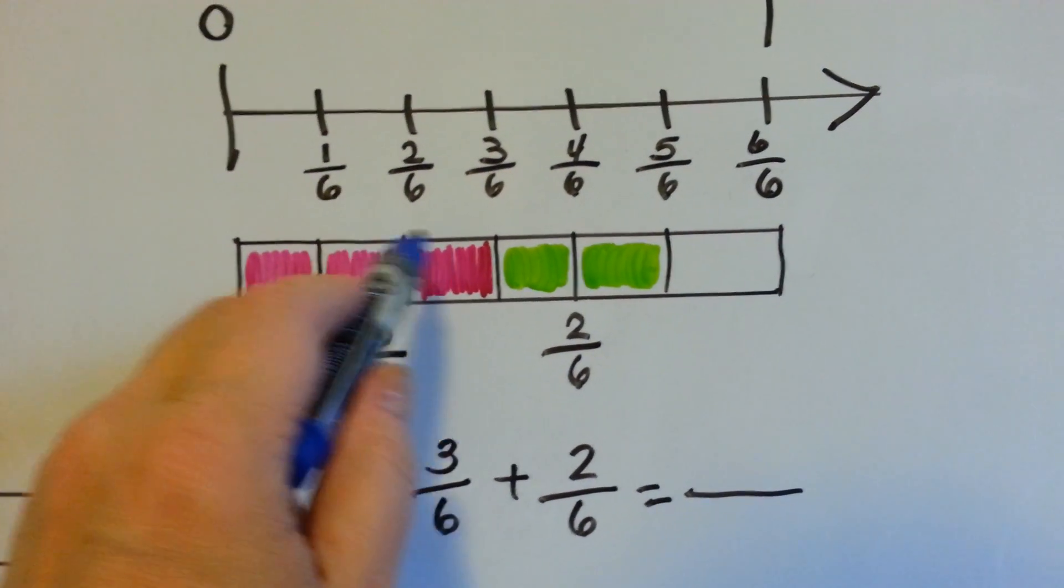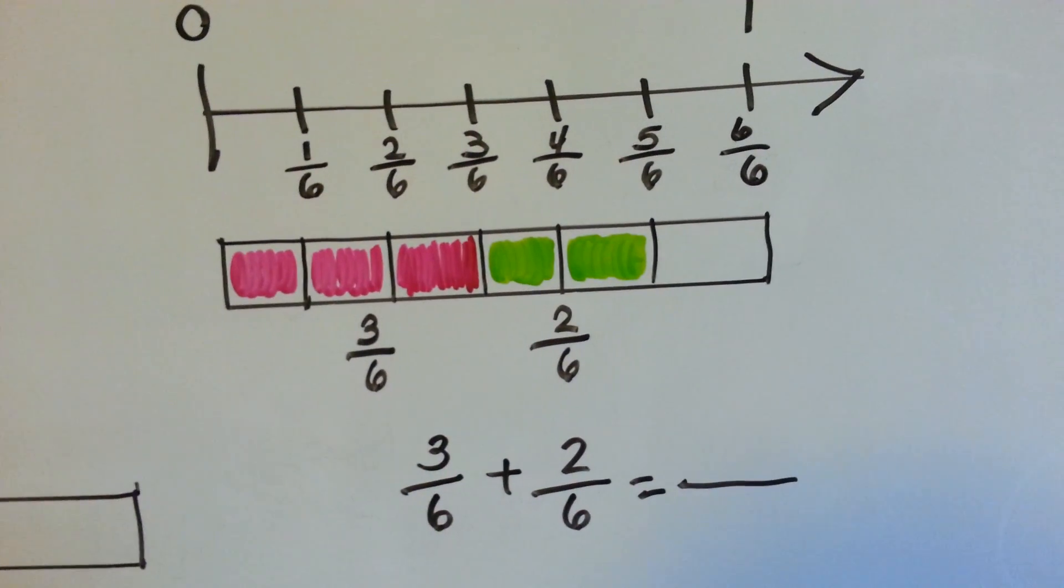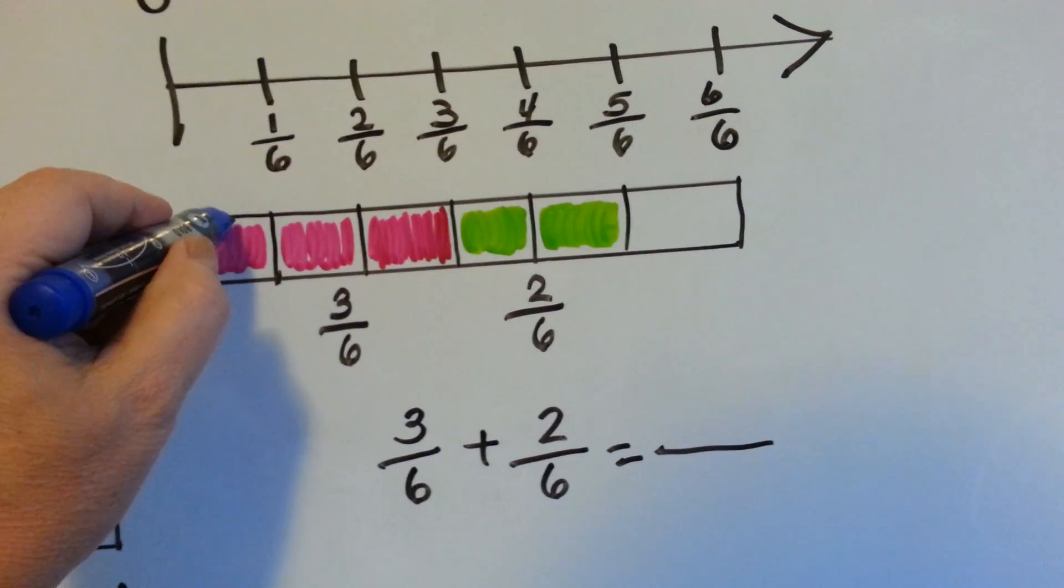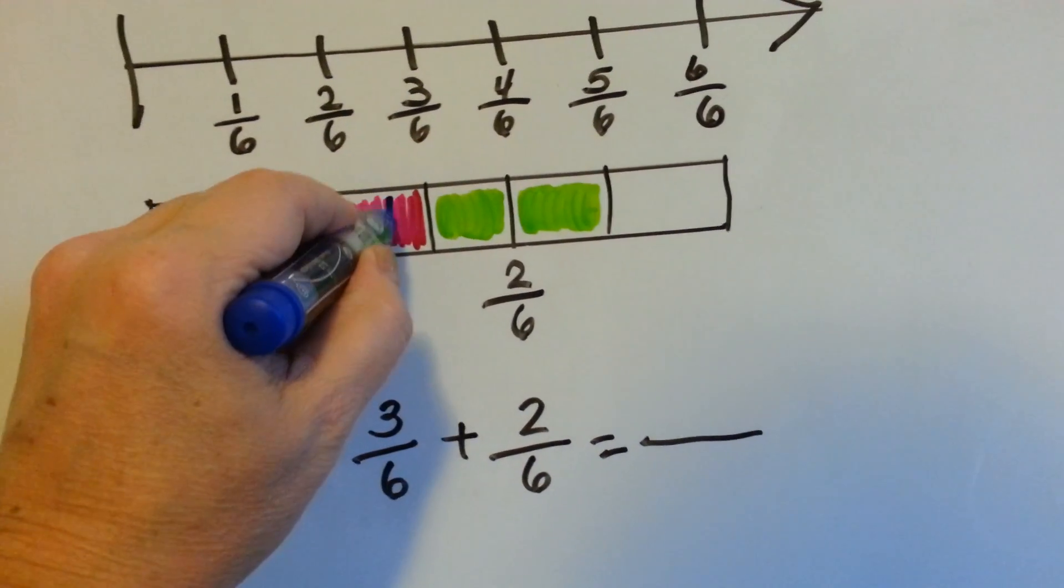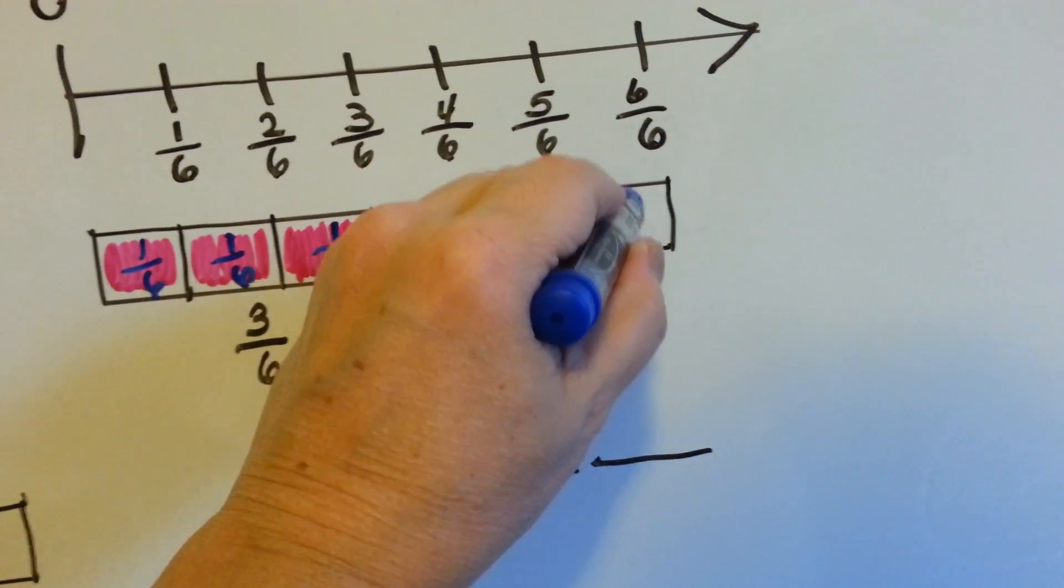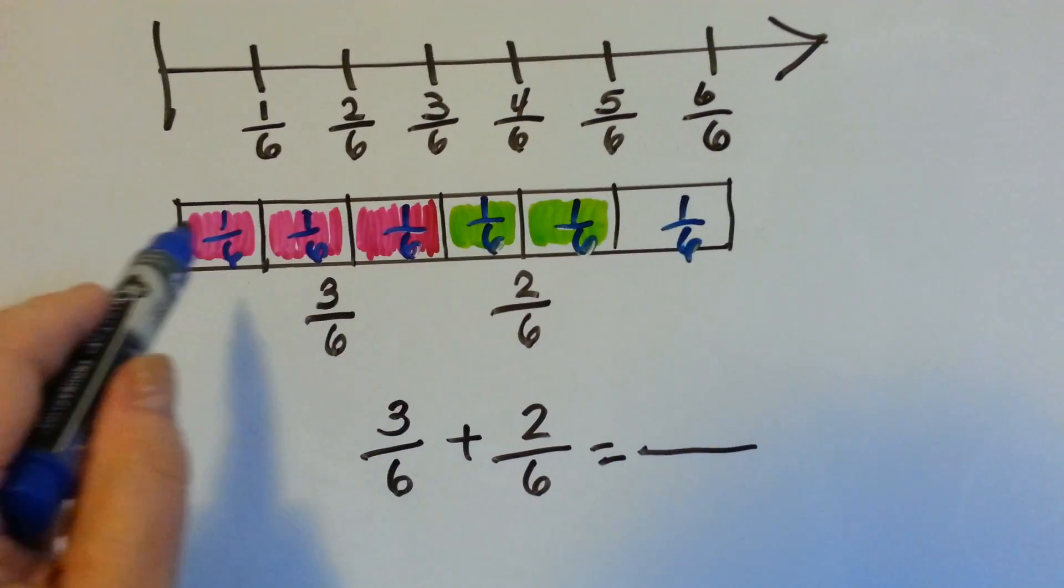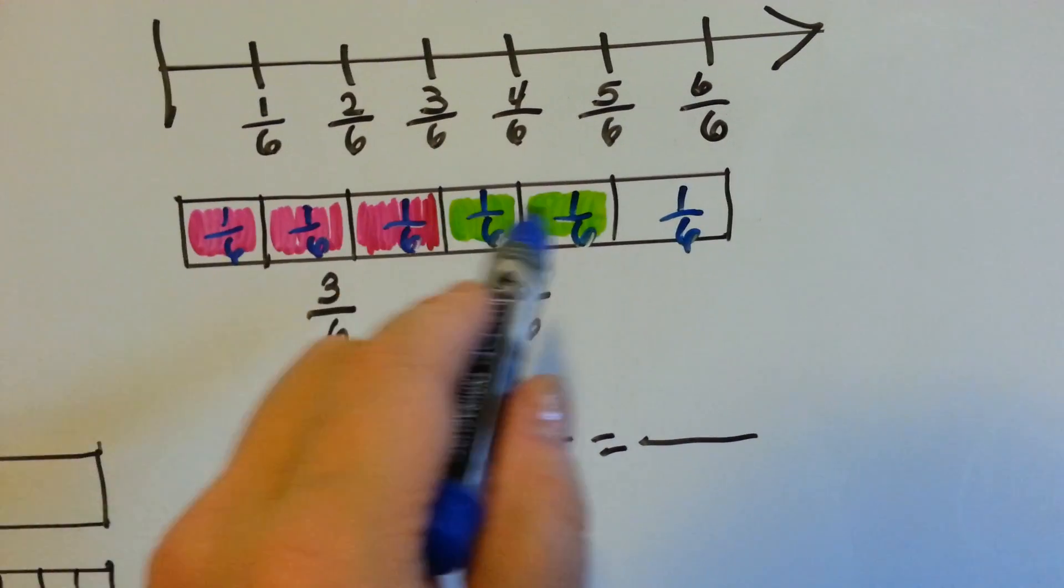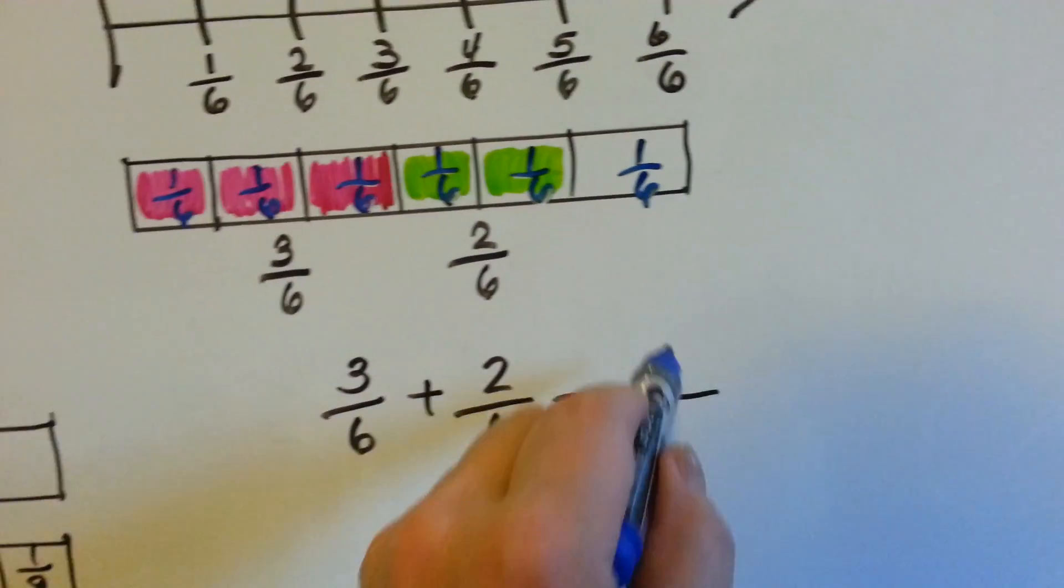3 sixths, 1, 2, 3, plus 2 sixths, 1, 2, is how many sixths? Well, if this is 1 sixth, and this is 1 sixth, and this is 1 sixth, and these are all 1 sixth, how many would we have if we took the pink and the green ones? We'd have 1, 2, 3, 4, 5.